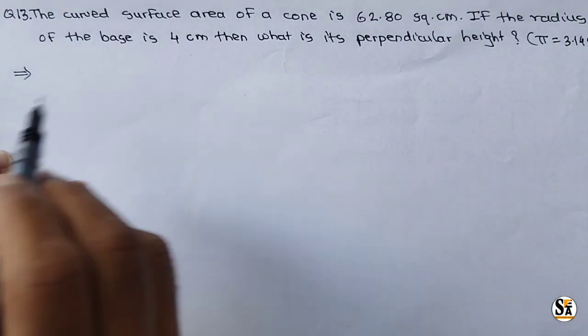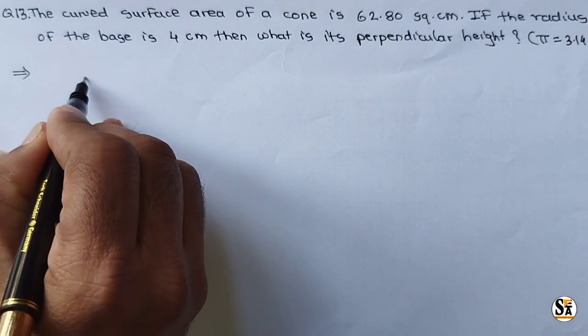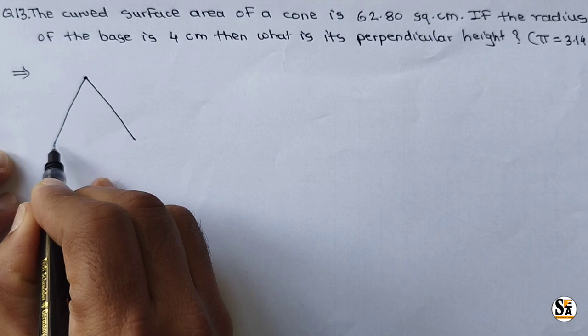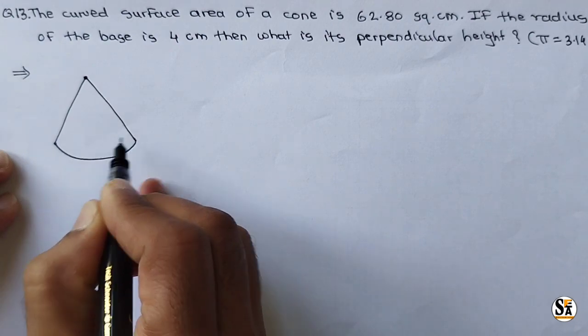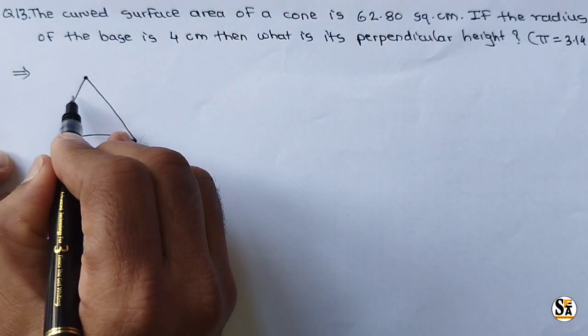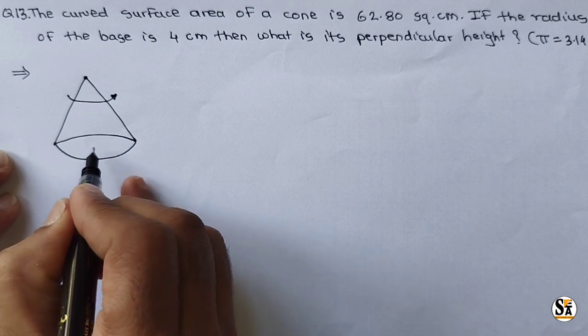Now see here, a cone is given. This is a tricky question. You know cone is like this. The base area is given. Total curved surface area is given. This is the curved surface area, and radius is also given, the base radius.